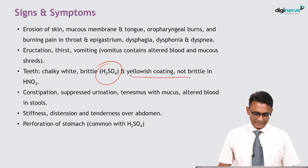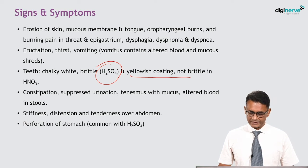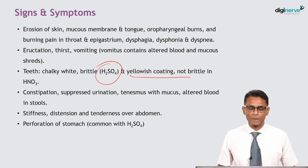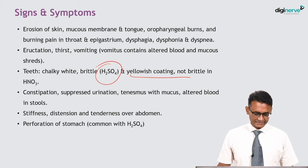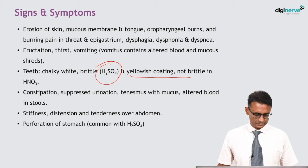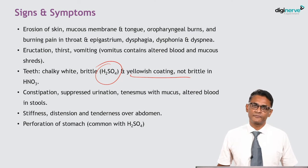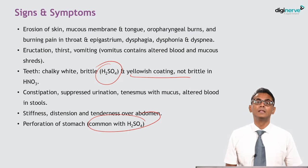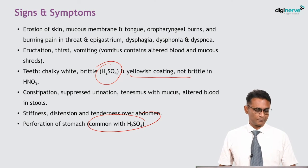Constipation, suppressed urination, and tenesmus with mucus — tenesmus is a painful desire to evacuate the bowels — and altered blood in stools. There is stiffness, distension, and tenderness over the abdomen. There may be perforation of the stomach in case of sulfuric acid poisoning; remember, perforation of the stomach is usually seen with sulfuric acid poisoning.